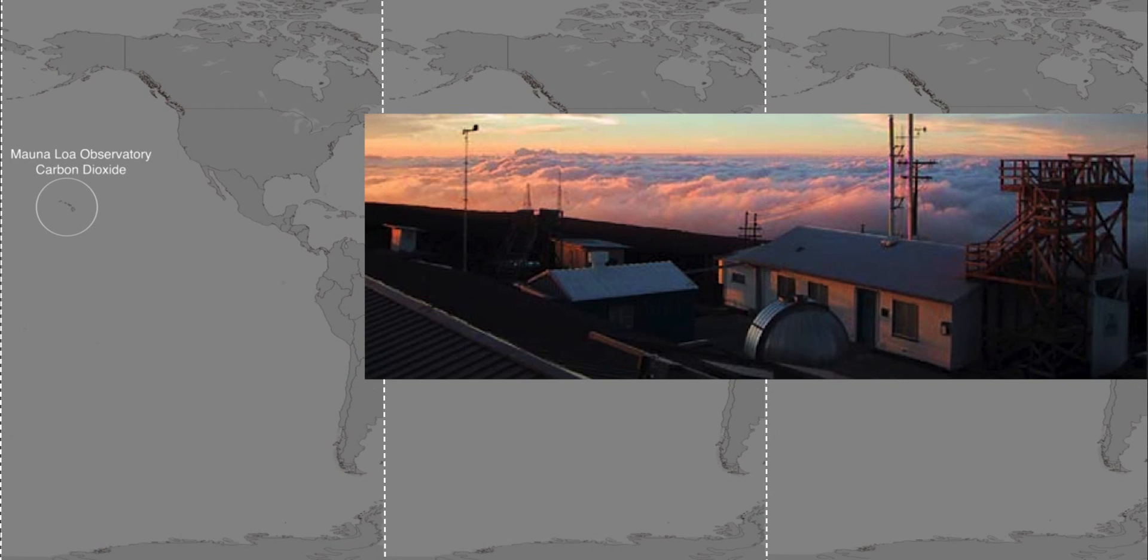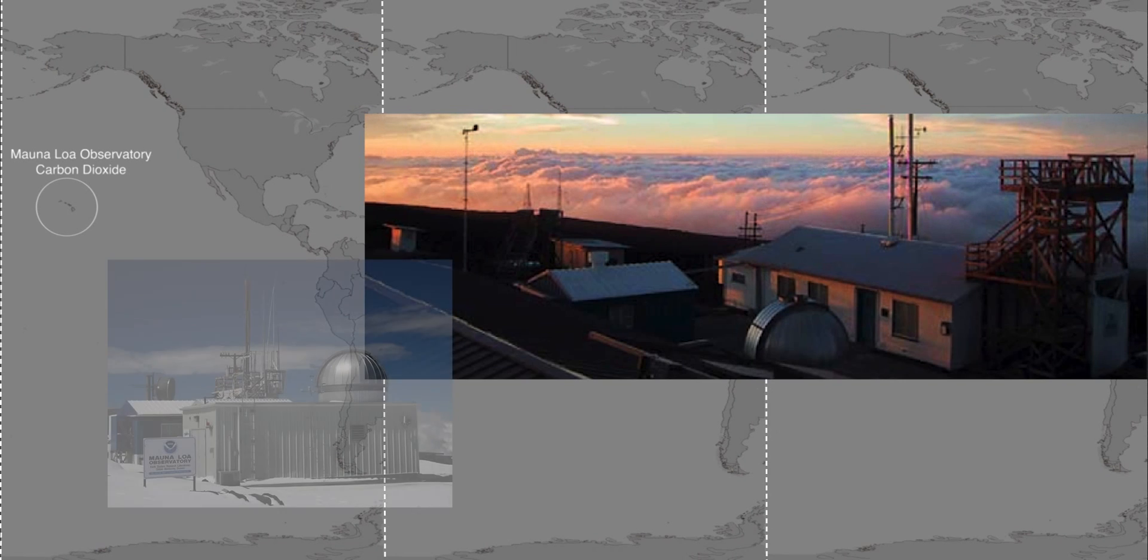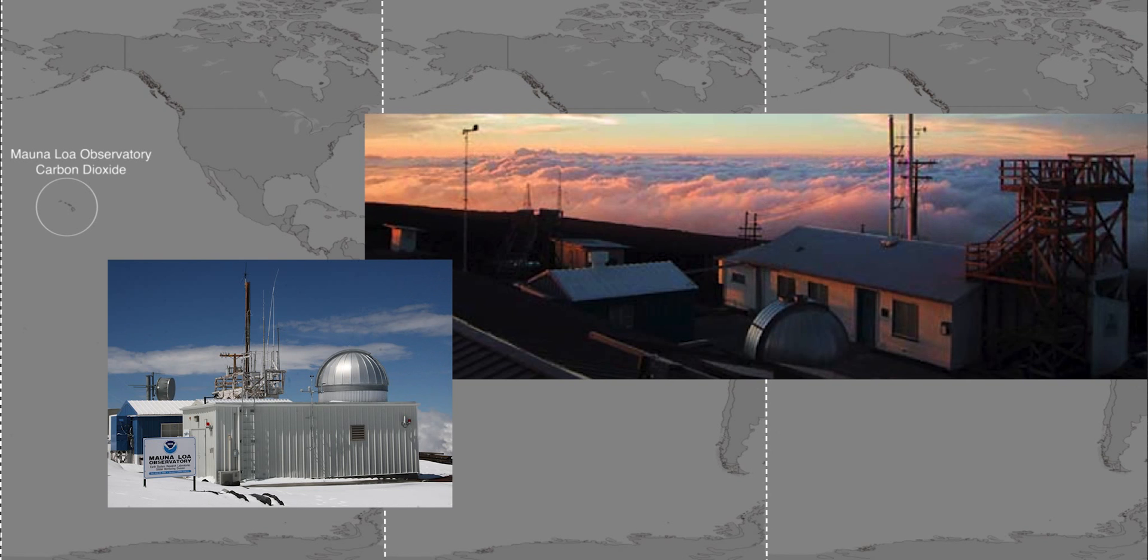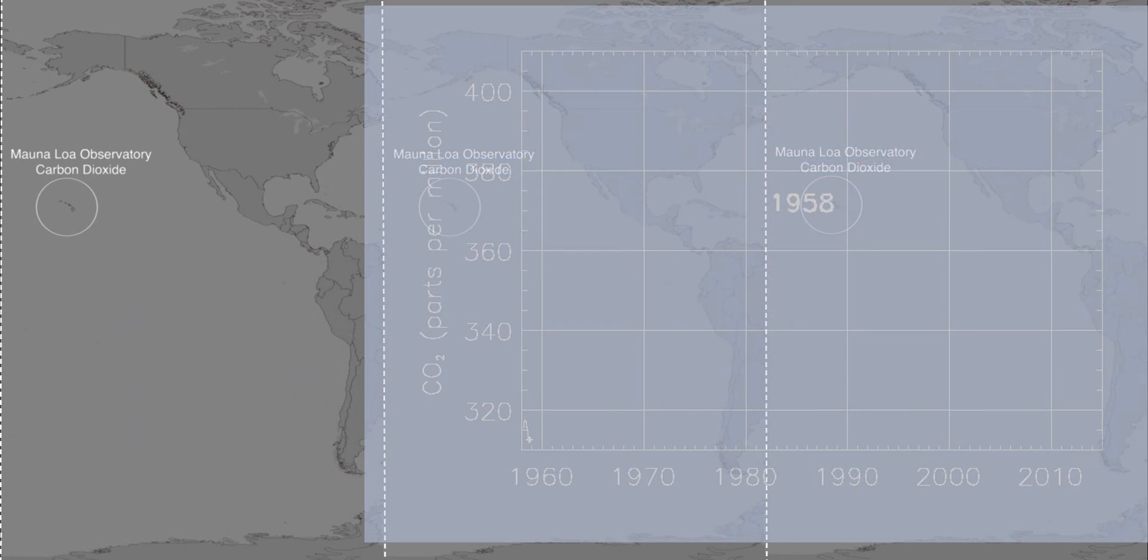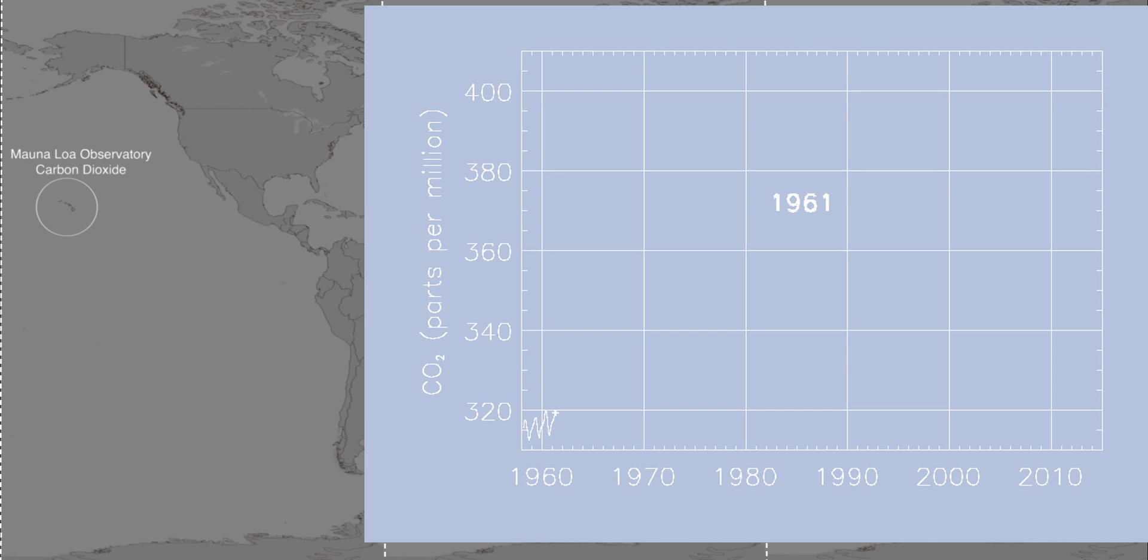Since 1958, atmospheric carbon dioxide has been measured at an observatory on the Mauna Loa Mountain in Hawaii. The white line shows atmospheric CO2 levels rising and falling at the Mauna Loa Observatory.